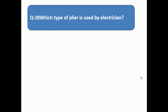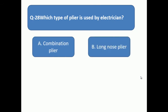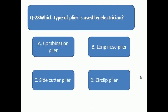Question 28: Which type of pliers is used by electrician? Which type of pliers is used by electrician? A: combination plier, B: long nose plier, C: side cutter plier, D: circlip plier.